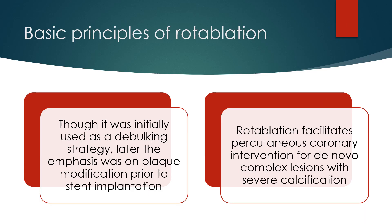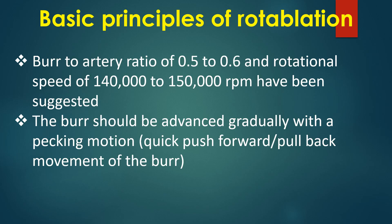Though it was initially used as a debulking strategy, later the emphasis shifted to plaque modification prior to stent implantation. Rotablation facilitates percutaneous coronary intervention for de novo complex lesions with severe calcification. A bur-to-artery ratio of 0.5 to 0.6 and rotational speed of 140,000 to 150,000 rpm have been suggested.